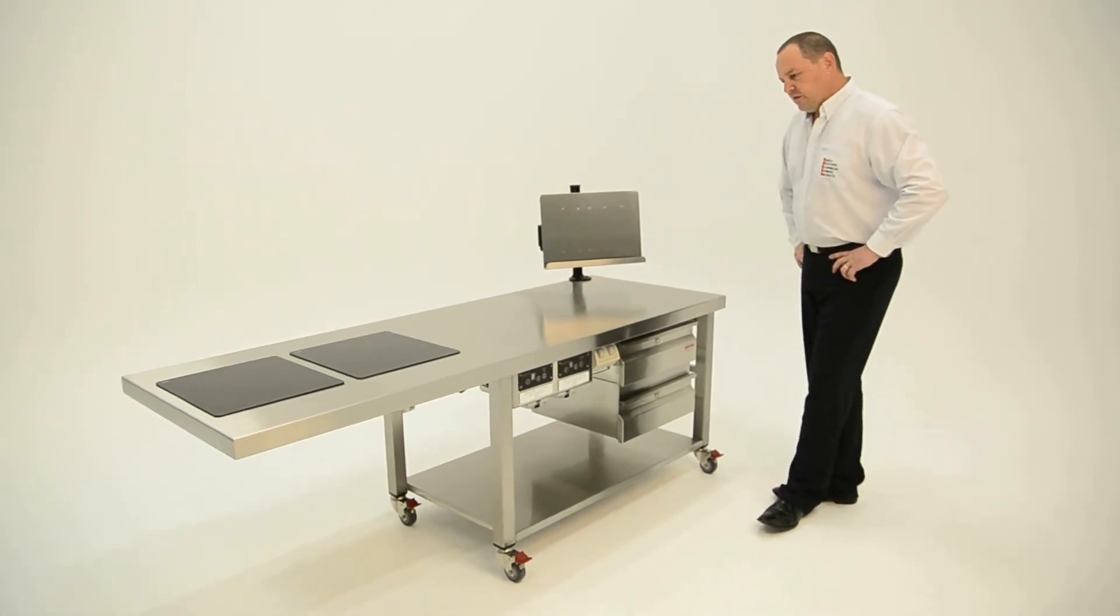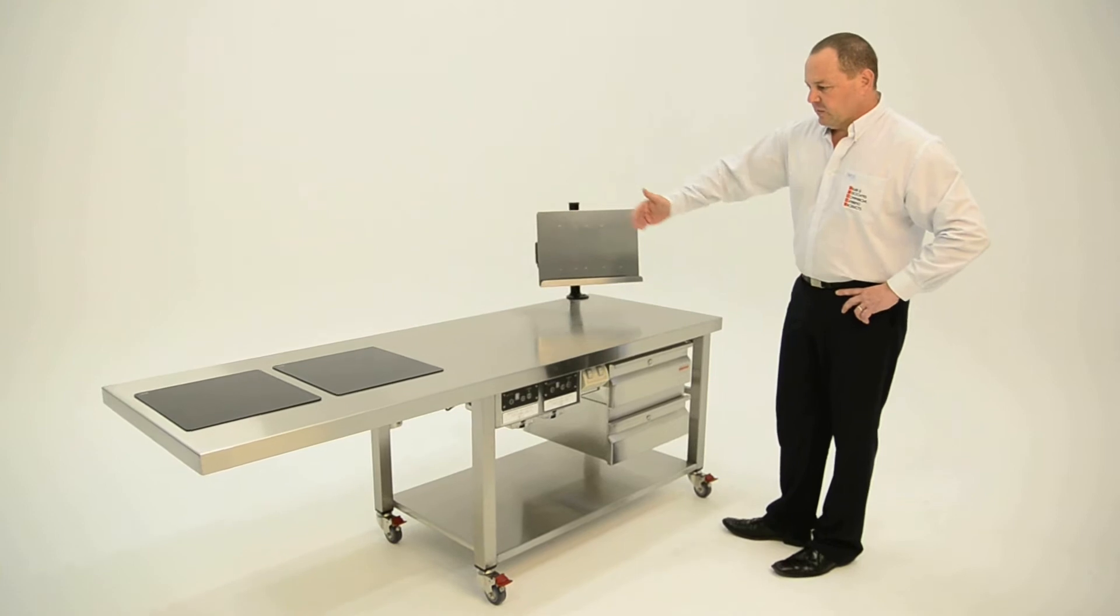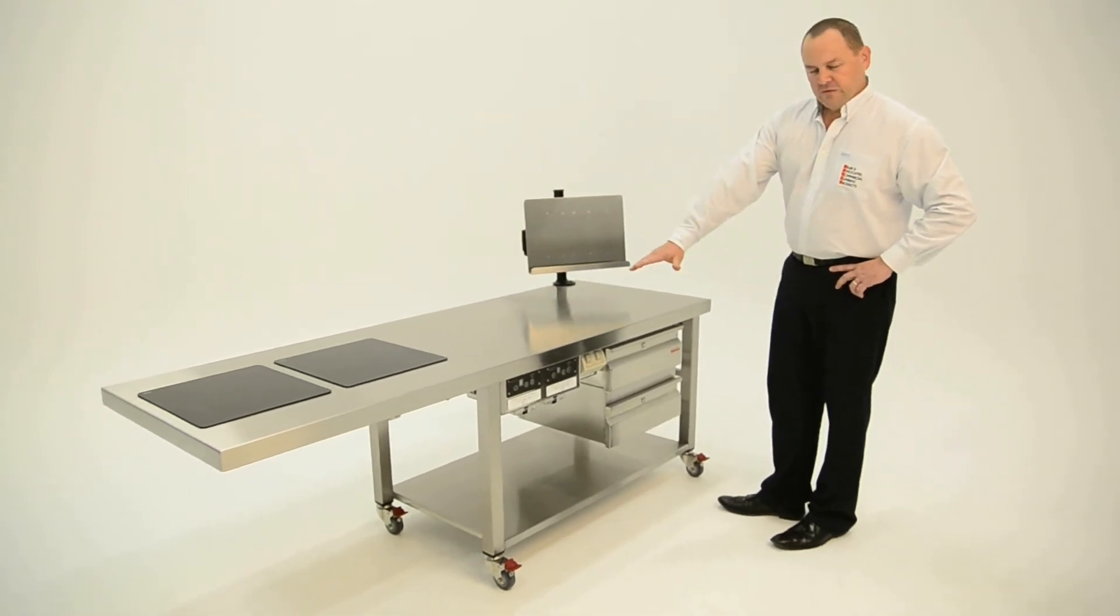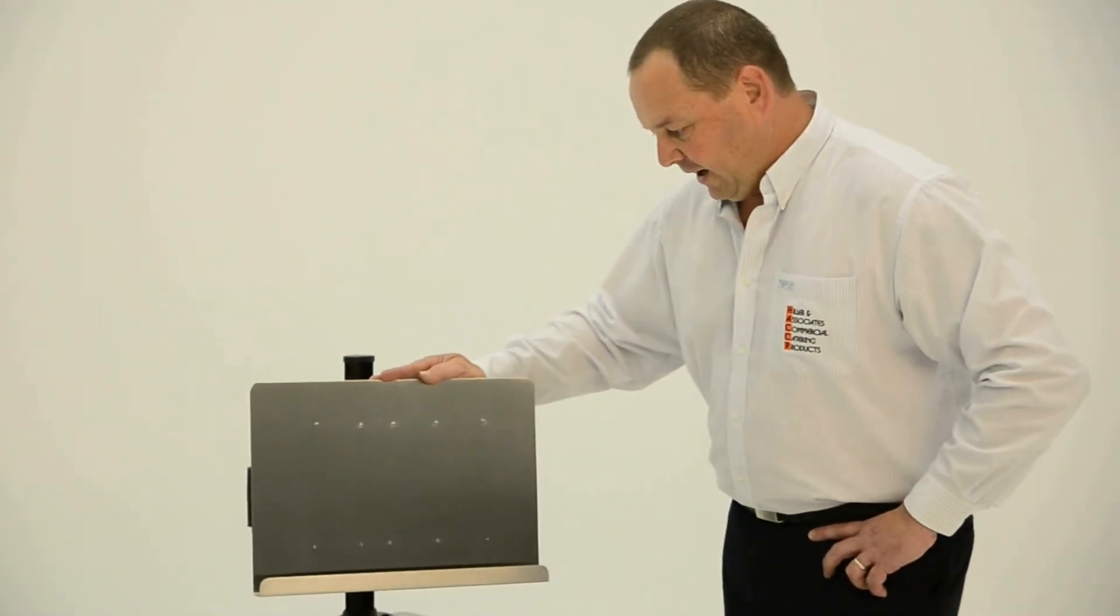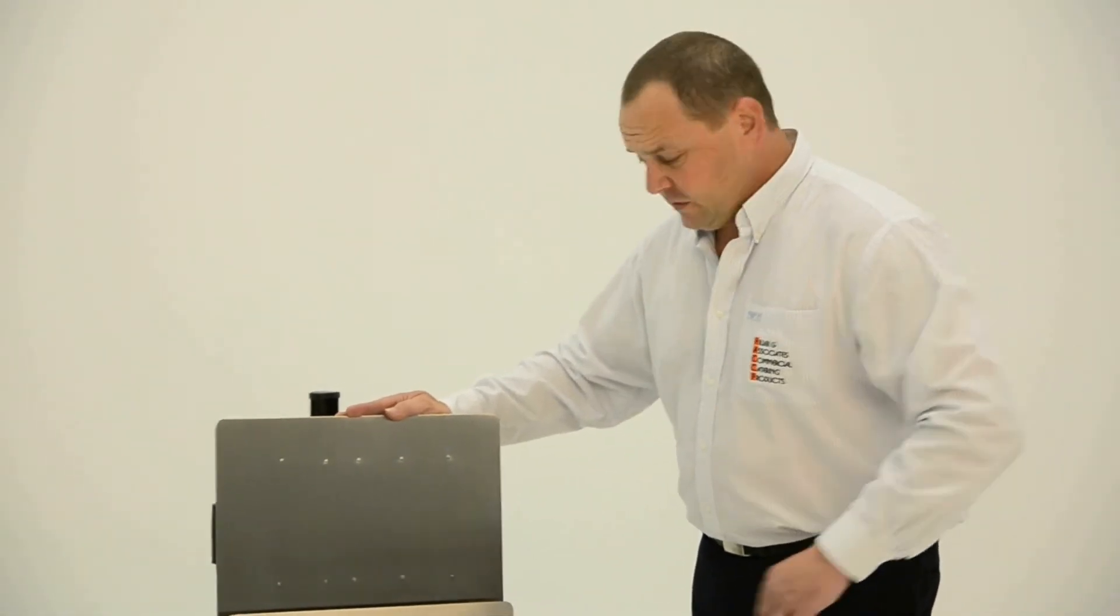This unit itself is 2 metres long, 680 millimetres front to back, and sitting 750 high at the moment for wheelchair access. The unit's provided with an easel to hold the recipe for the student.